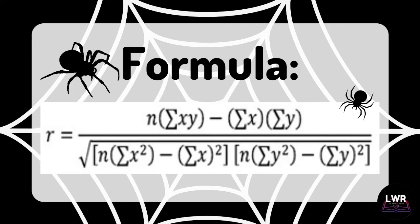r is equal to n times summation xy minus summation x times summation y, all over the square root of quantity n times summation x squared minus summation x raised to 2, times quantity n times summation y squared minus summation y raised to 2.